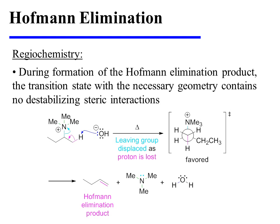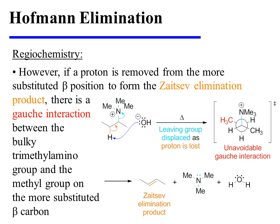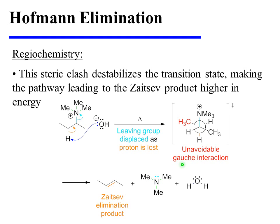During formation of the Hoffman elimination product, the transition state with the necessary geometry contains no destabilizing interactions. Notice how the proton and the leaving group are arranged anti-periplanar to one another. However, if a proton is removed from the more substituted beta position to form the Zaitsev elimination product, there is a gauche interaction between the bulky trimethylamino group and the methyl group on the more substituted beta carbon. This unavoidable steric clash destabilizes the transition state, making the pathway leading to the Zaitsev product higher in energy.